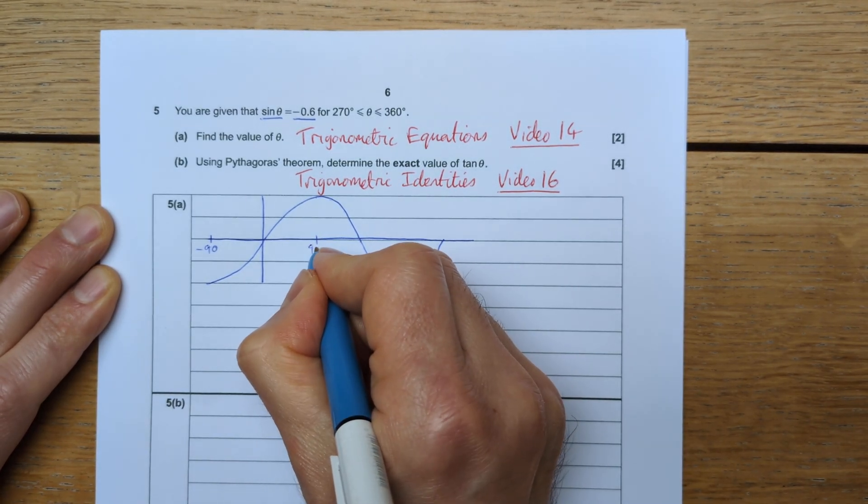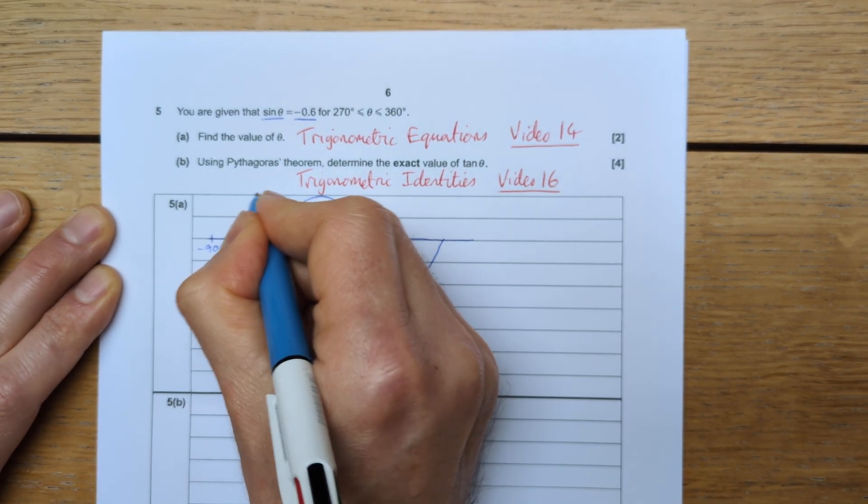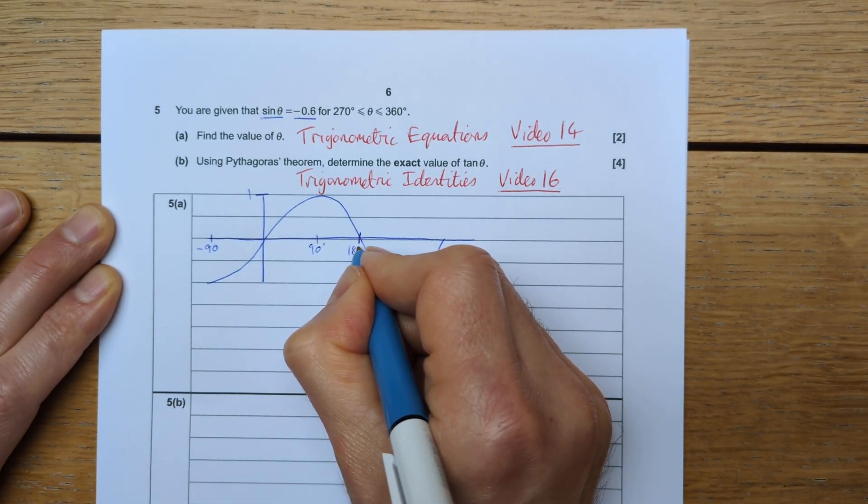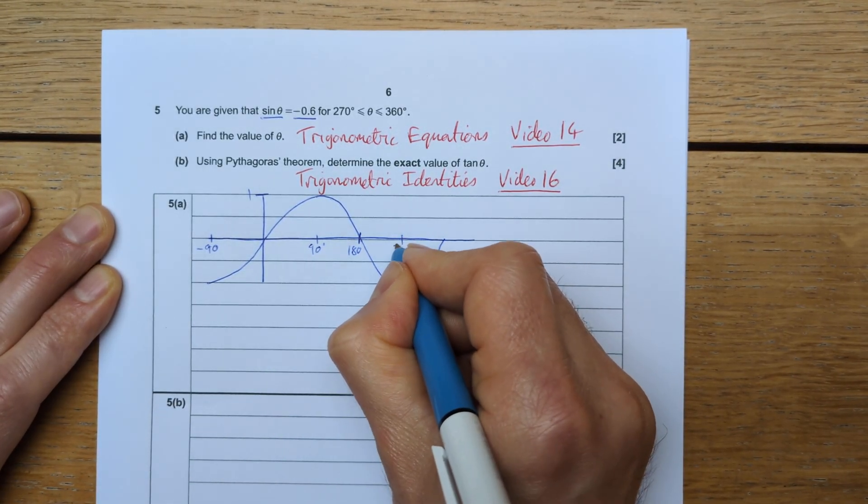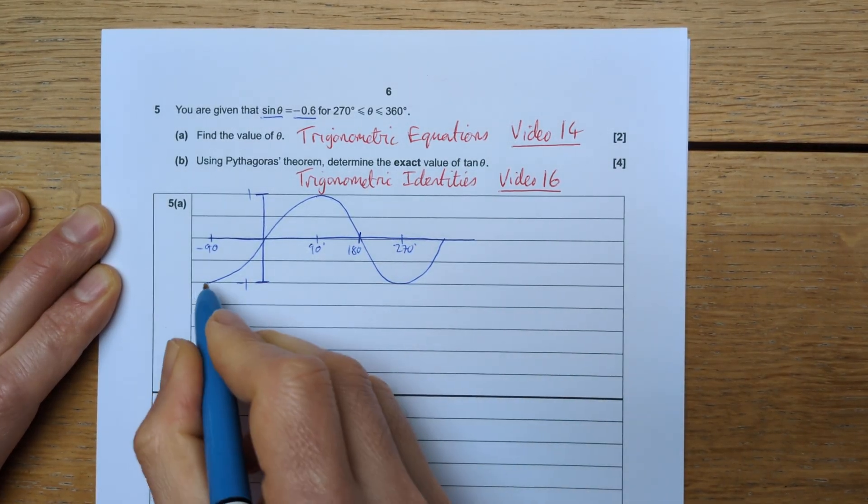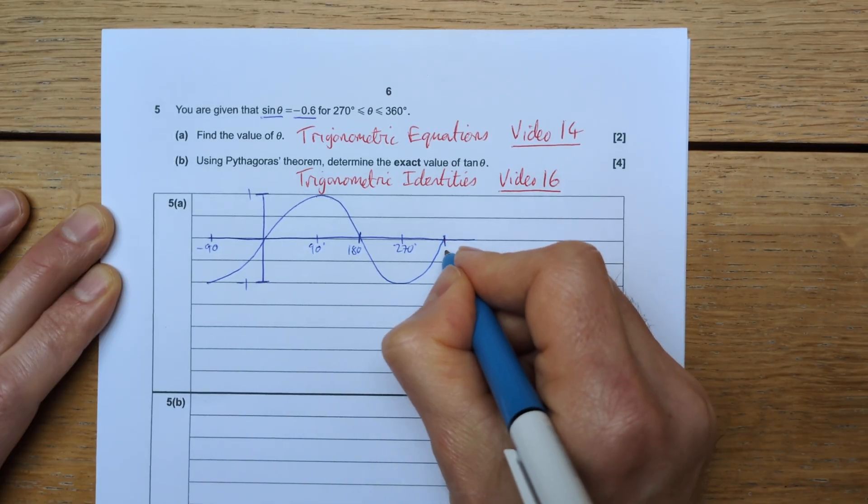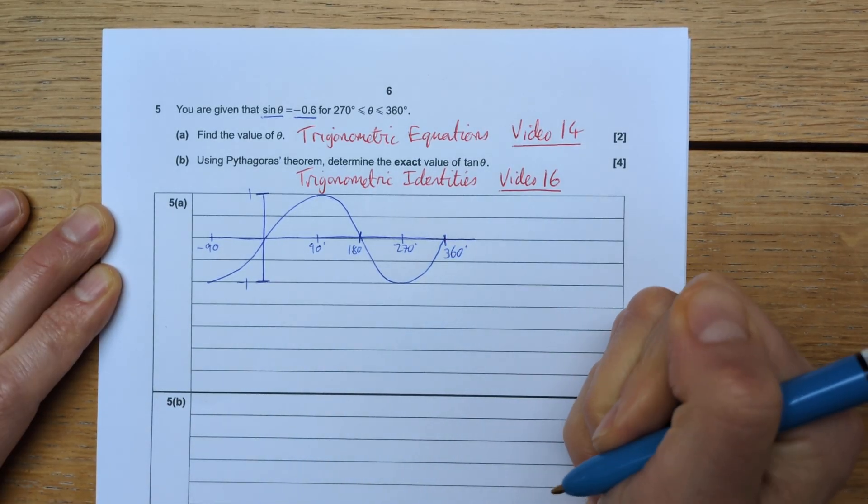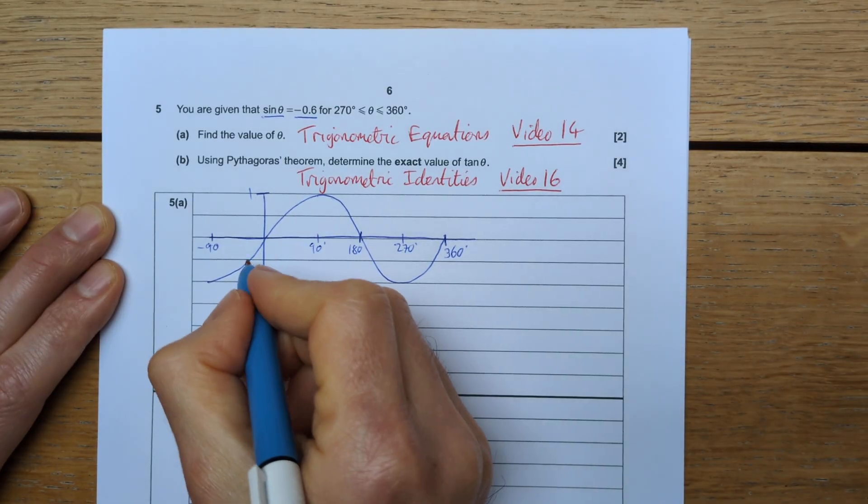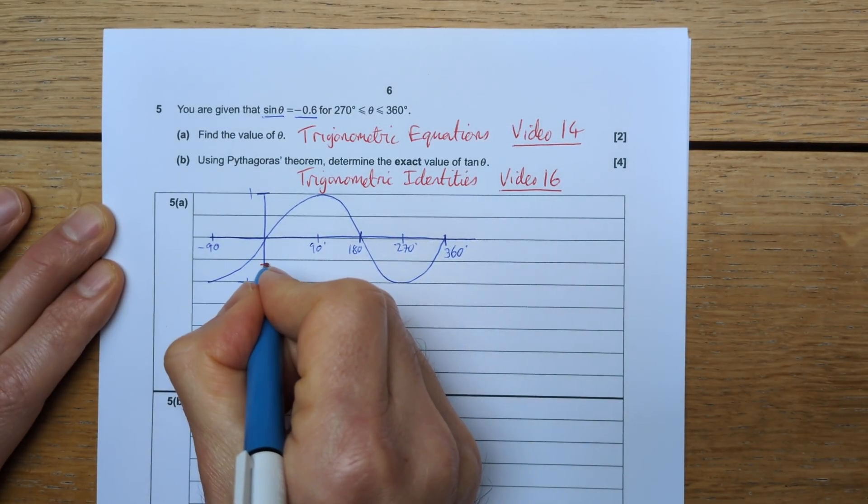So 90 degrees, sine of 90 is 1, that's the maximum point. Sine of 180 degrees is 0. Sine of 270 degrees is negative 1, that's the minimum point, and so is sine of negative 90. And sine of 360 is back at 0.